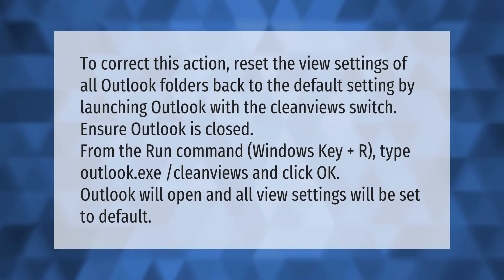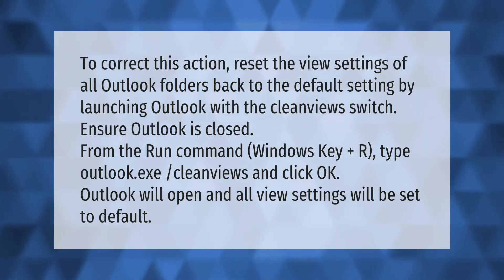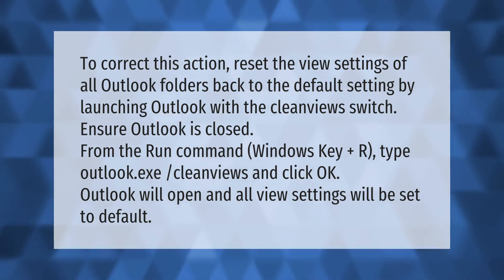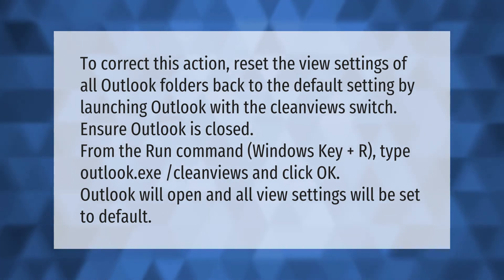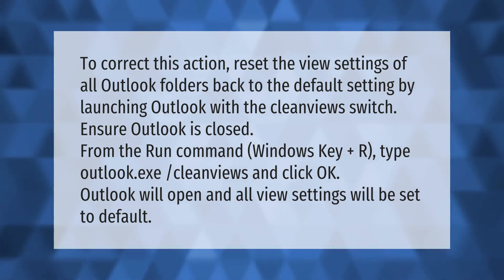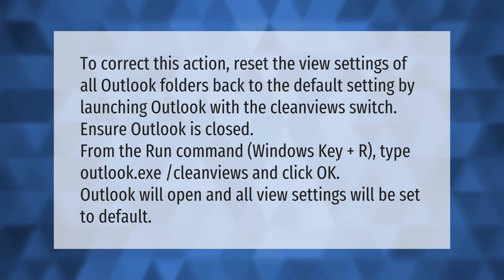To correct this, reset the view settings of all Outlook folders back to the default setting by launching Outlook with the clean view switch. Ensure Outlook is closed, then from the Run command (Windows key + R), type 'outlook.exe /cleanviews' and click OK. Outlook will open and all view settings will be set to default.